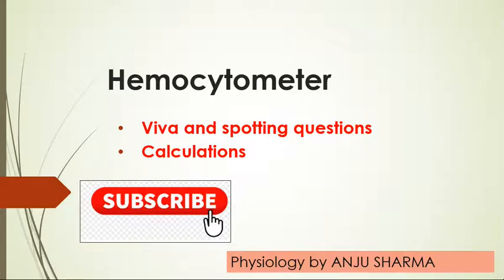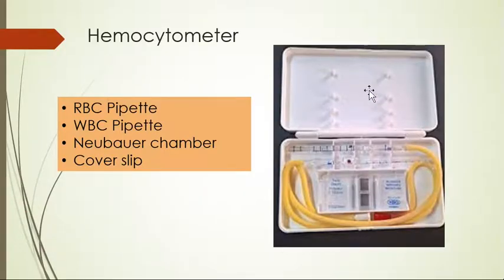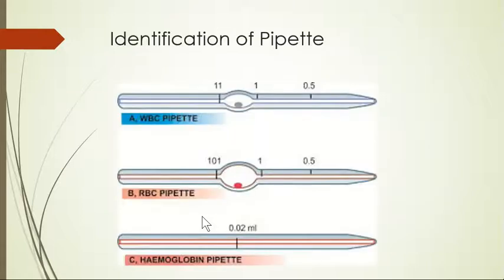This box is hemocytometer. The box contains two pipettes, one Neubauer chamber, and a cover slip which is not shown here. Within sporting exams, you most frequently get these apparatus to identify.